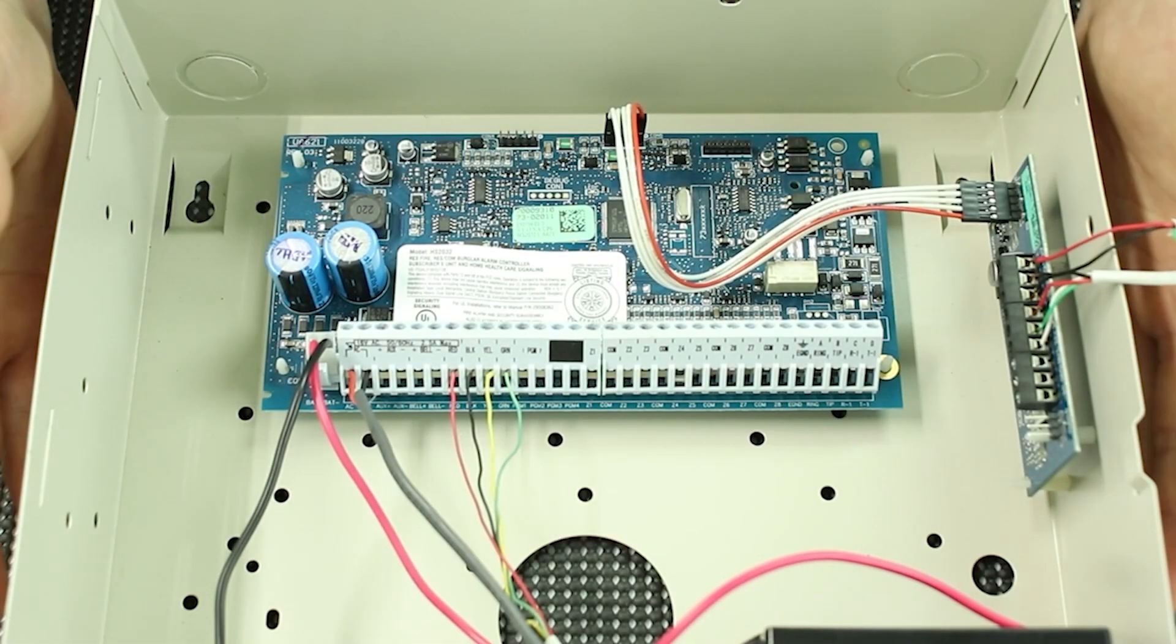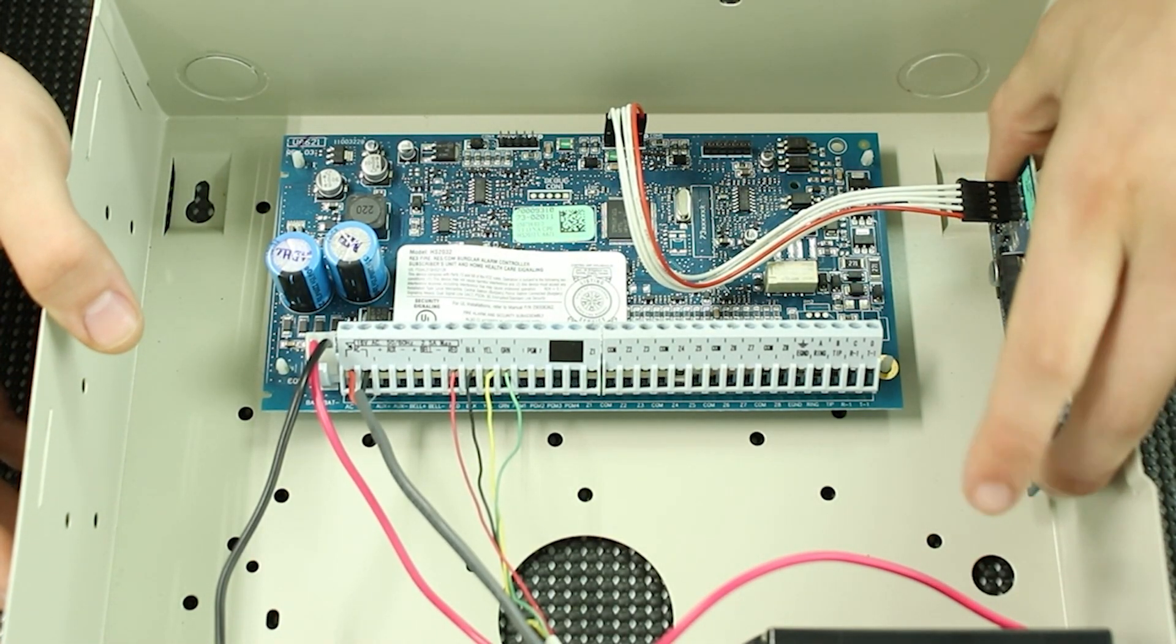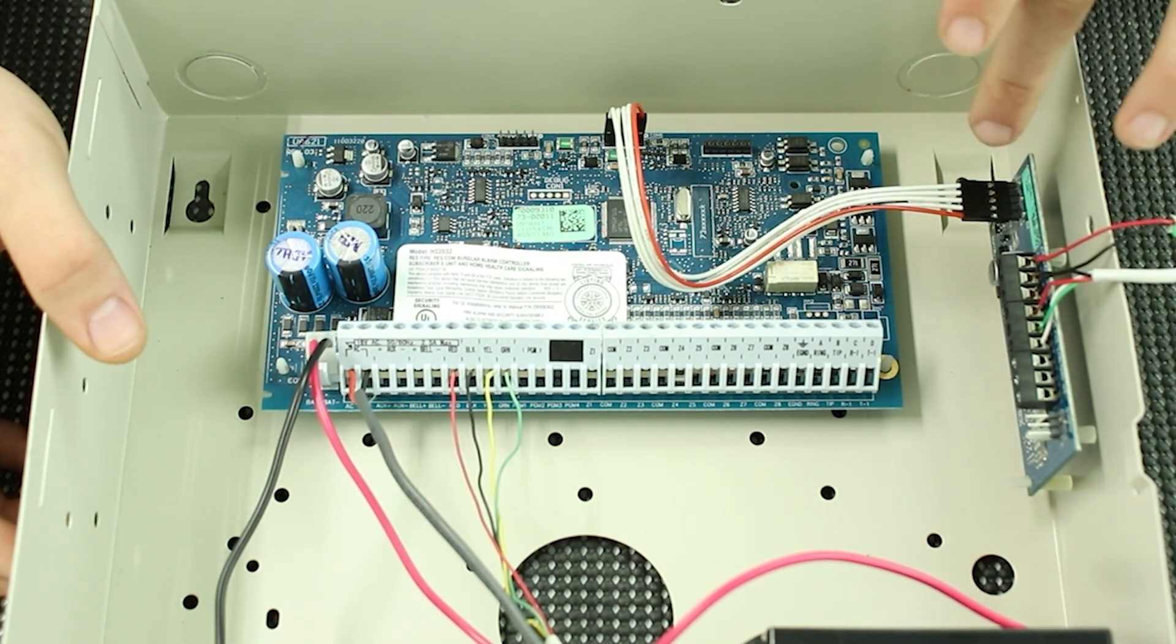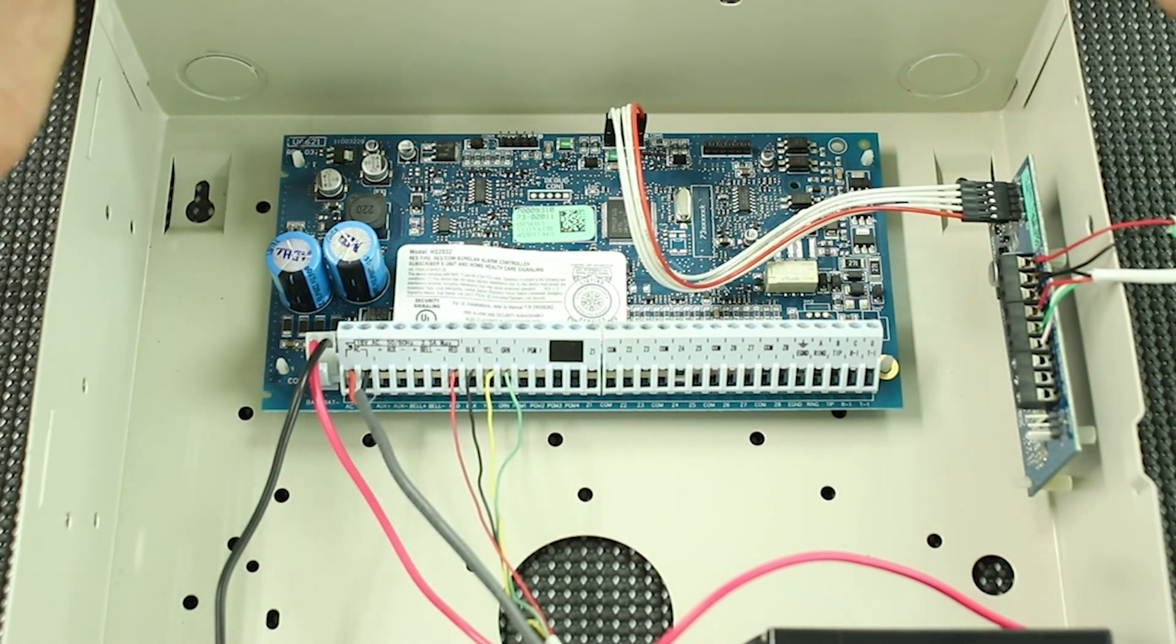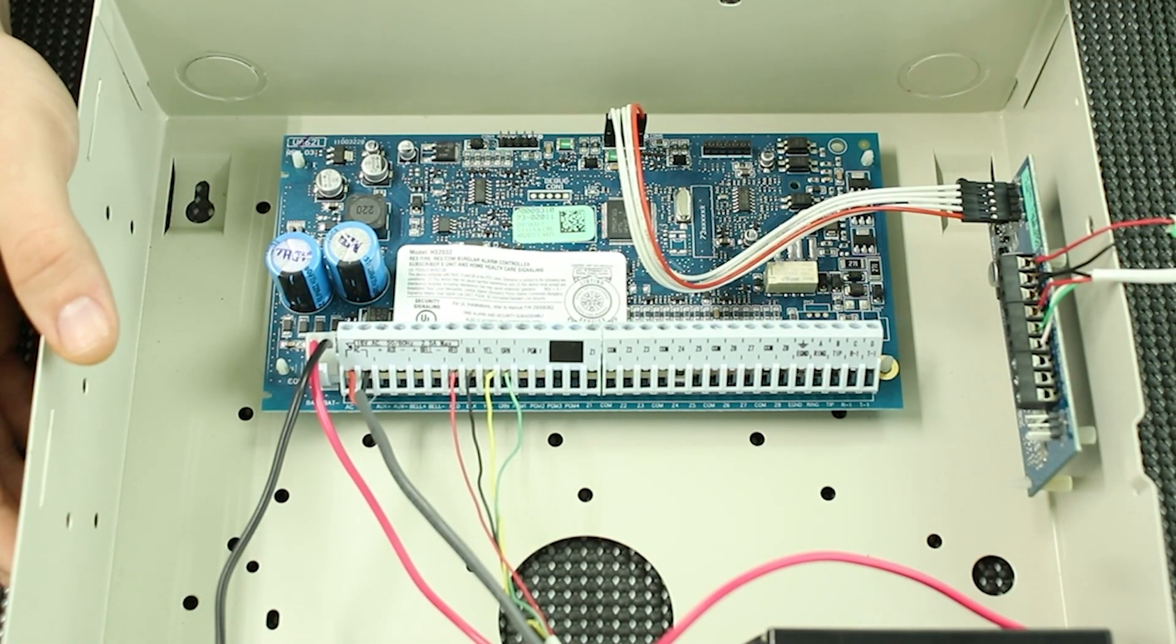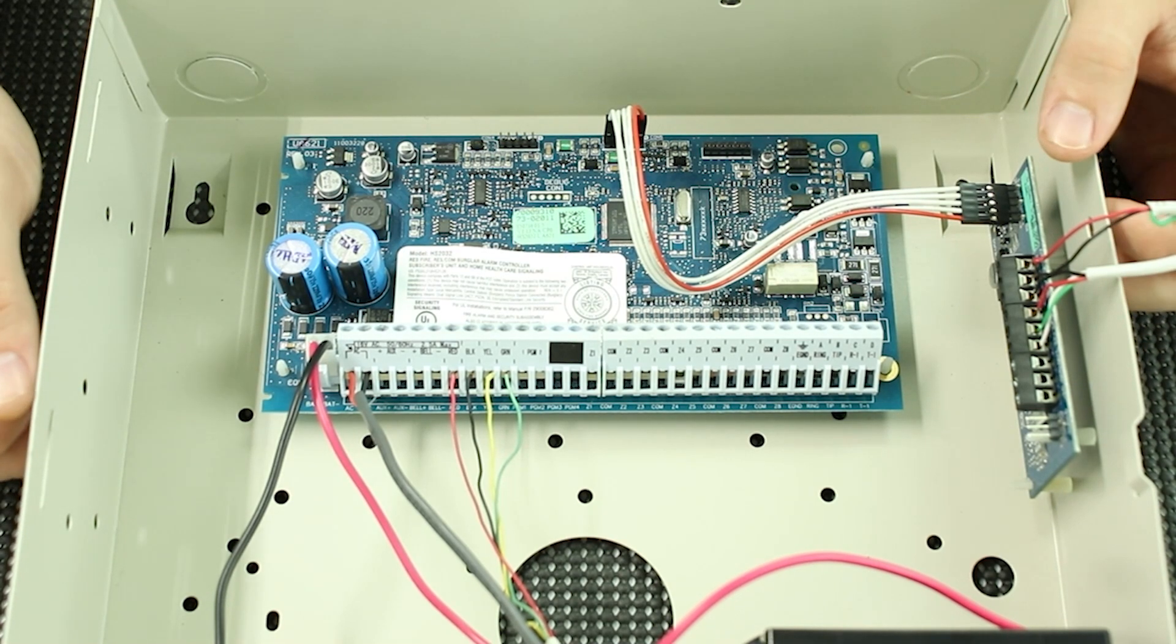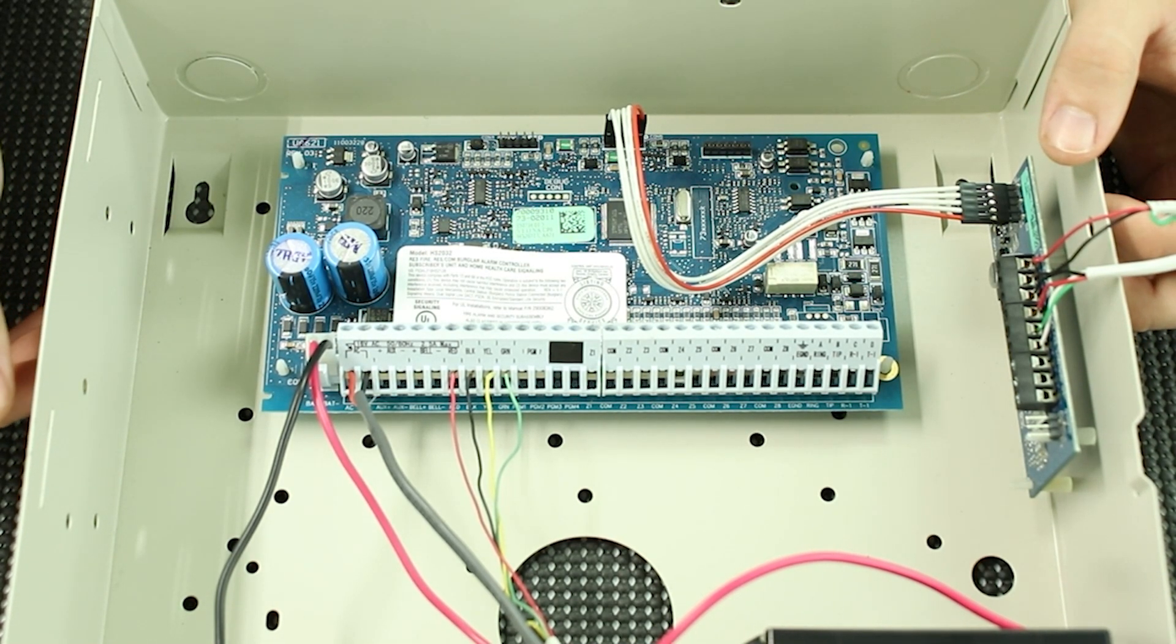I have taken the daughter board and reinstalled it back into the main panel. We've got a PC link connection here and this is what your final product will look like inside the main cabinet of your DSC Neo. I'm going to hop over and show you what the keypad will show whenever the communicator is installed properly.